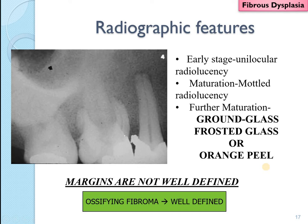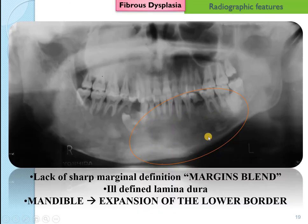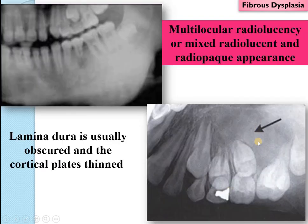Radiographically, there are multiple appearances. Fibrous dysplasia predominantly occurs in the mixed phase showing both radiolucent and radiopaque appearances, giving rise to a typical ground glass or frosted glass appearance — some literature may also call it an orange peel appearance. This is an important finding because in ossifying fibroma, a neoplastic variant of fibro-osseous lesions, the lesion is very well defined. Ground glass appearance can be seen in occlusal radiographs and may lead to expansion of the lower border of the mandible.